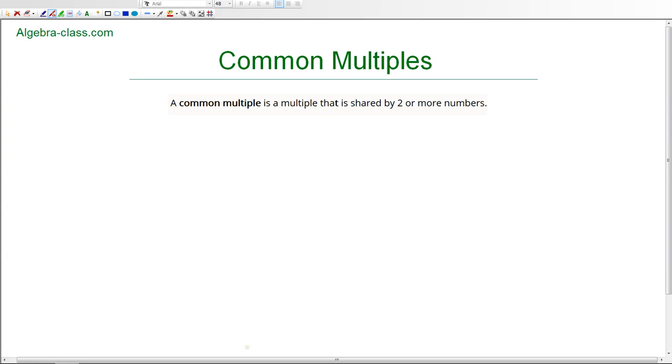Next we're going to talk about common multiples. A common multiple is a multiple that is shared by two or more numbers, and that's why it's called common multiple. We're actually going to take a look at three numbers: two, three, and four, and we're going to identify any common multiples for these three numbers.